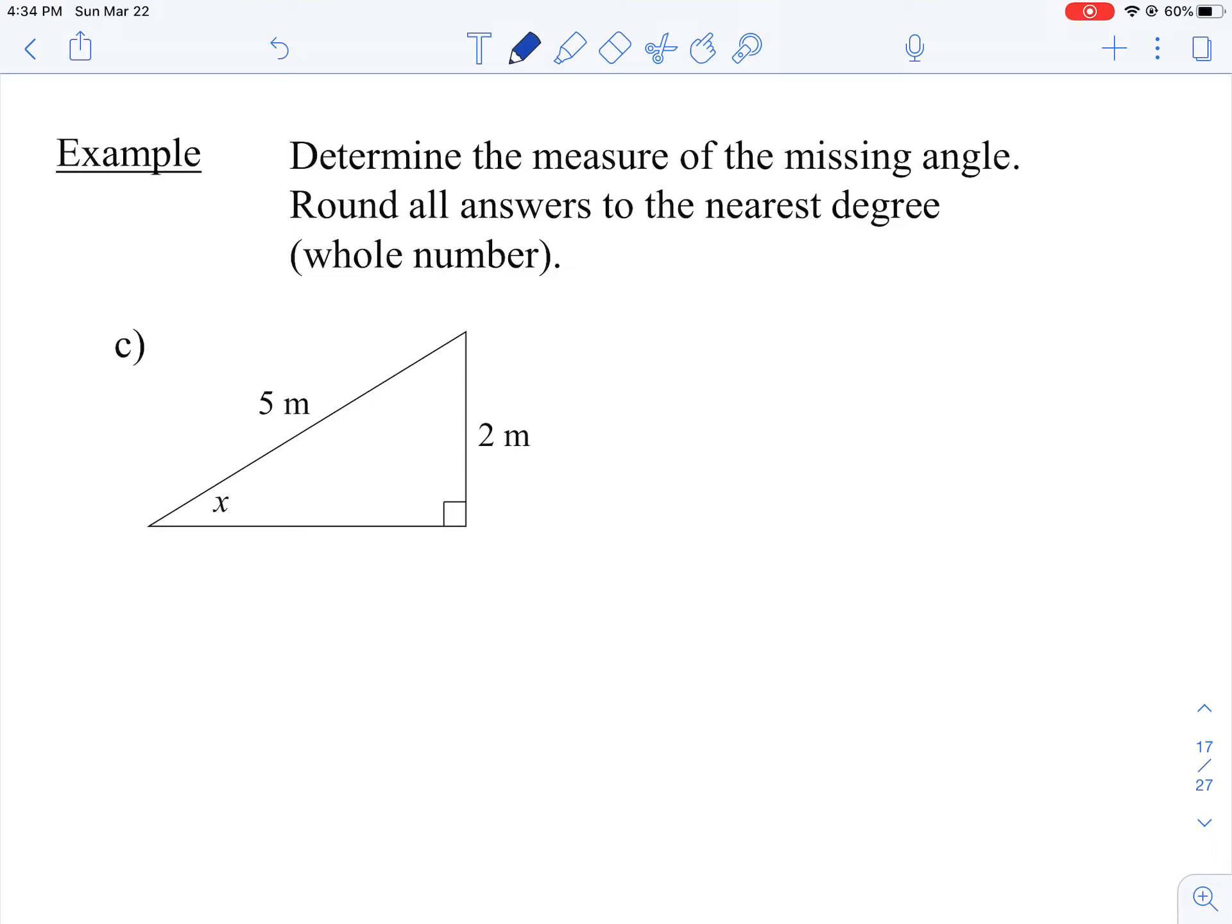Okay, so hopefully you were able to complete part C on your own. Let's go through it together now. So X, reference angle, 2 is your opposite. 5 is your hypotenuse.